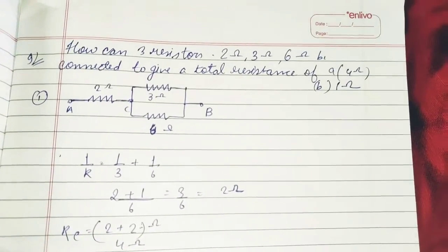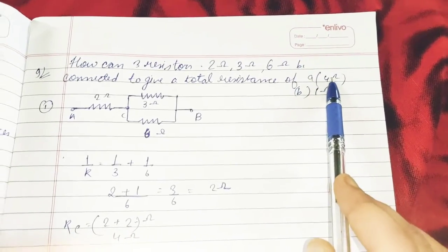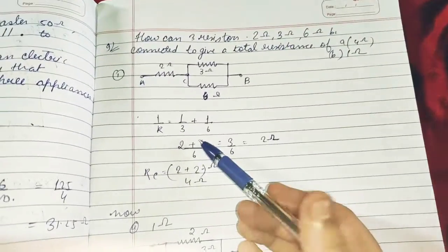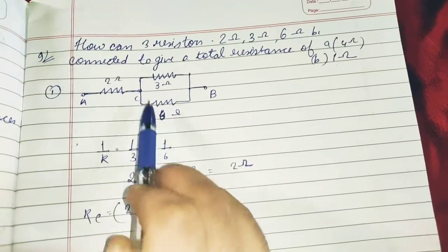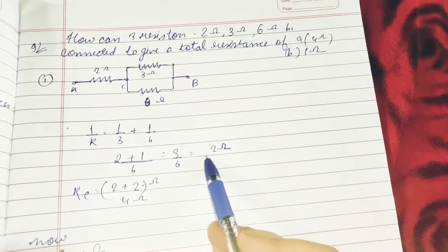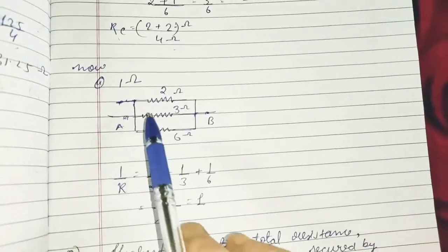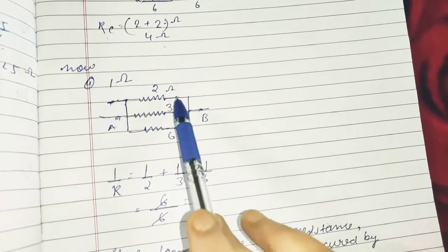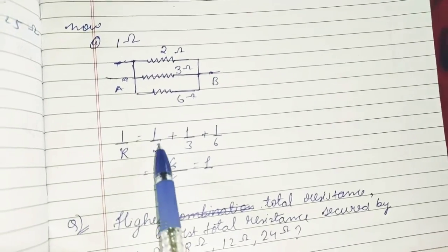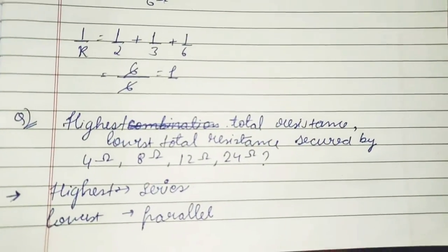How can three resistors of 2 ohm, 3 ohm, and 6 ohm be connected to give a total resistance of 4 ohm and 1 ohm? We check in rough: 1/R = 1/3 + 1/6 gives 2 ohm for the parallel combination of 3 and 6 ohm, and then 2 + 2 = 4 ohm in series. For 1 ohm, all three in parallel: 1/R = 1/2 + 1/3 + 1/6 gives 1 ohm.